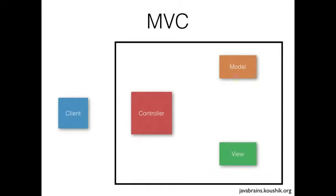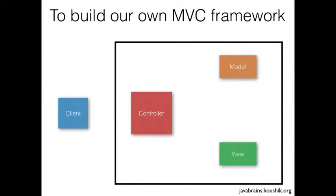This is a standard MVC diagram which we have been seeing all along. We have a client talking to a controller; the controller talks to the model; and the view is for rendering the output so that it's consumable by the client. If you design this in a Java web application using servlets and JSPs, you would have JSPs for the view, business services for the model, and servlets which act as controllers. This is an MVC pattern because we are separating the controllers from the model from the view.